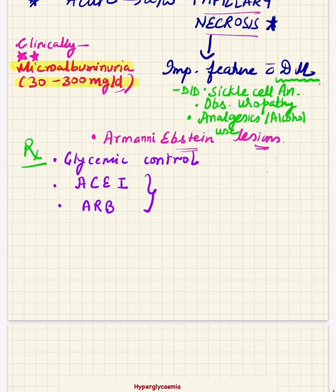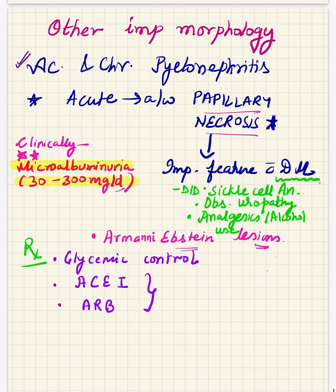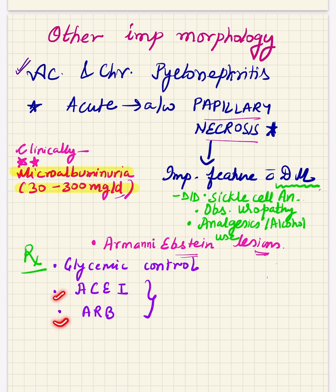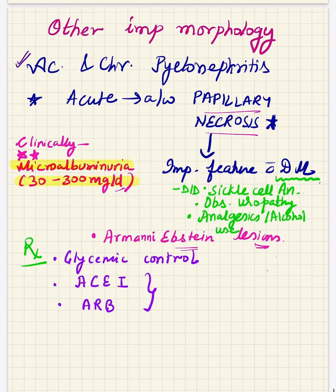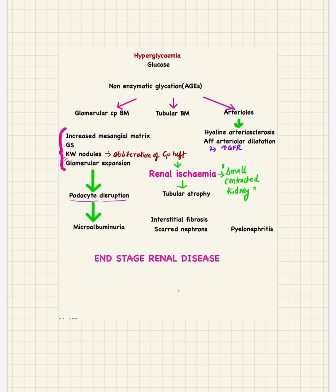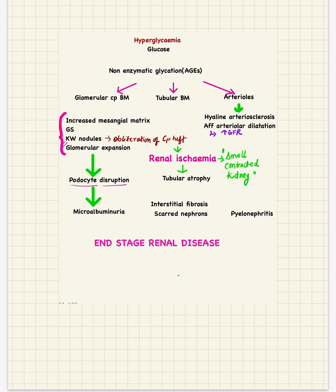In treatment, glycemic control is important. Since in diabetes the renin-angiotensin system is also activated, ACE inhibitors and angiotensin receptor blockers are also important.